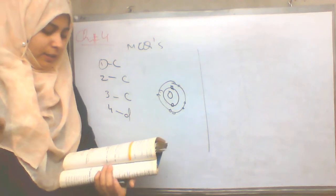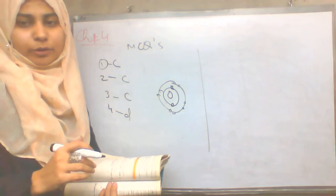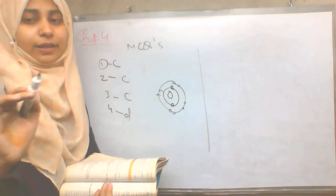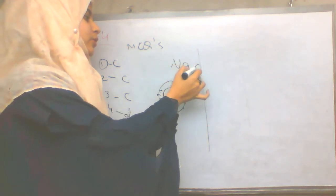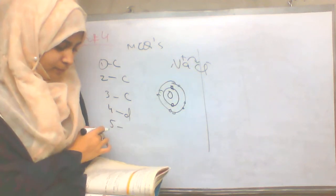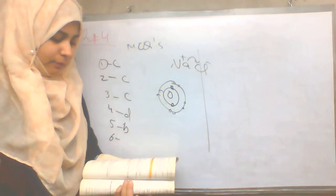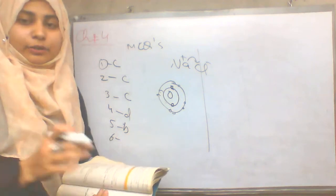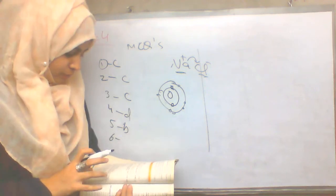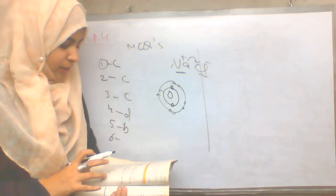Transfer of electrons results in ionic bonding, whereas mutual sharing of electrons results in covalent bonding. One atom becomes positive and the other becomes negative — for example, sodium positive and chloride negative. Question 5B and 6B: When an electronegative element combines with an electropositive element, the type of bonding formed is ionic bonding.